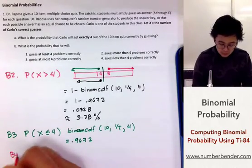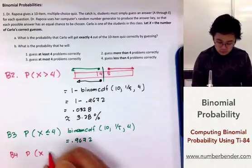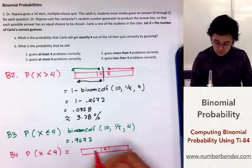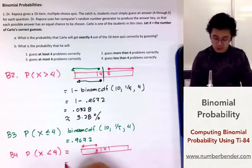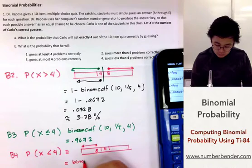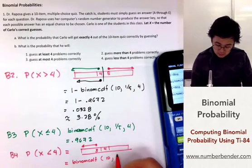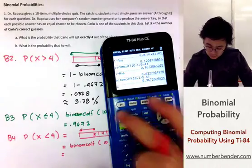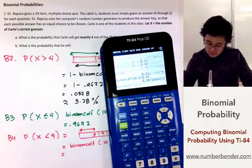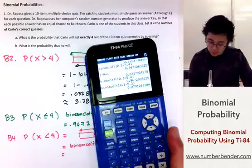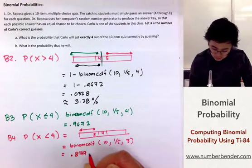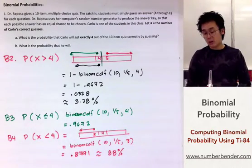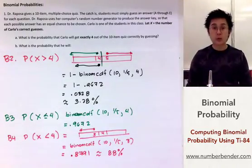For the last problem, B4, we're looking for the probability of x < 4, which means 3 and below. Using binomcdf with n=10, p=1/5, and x=3, we get 0.8791, or approximately 88%. This is how we use our TI-84 in computing for binomial probability.